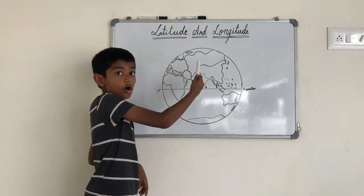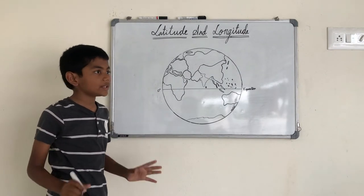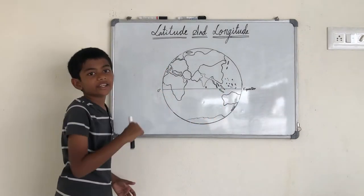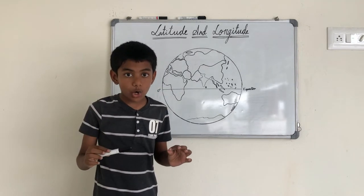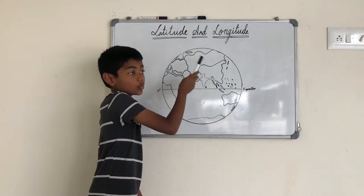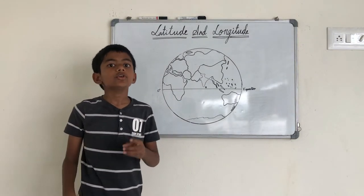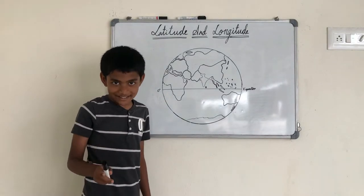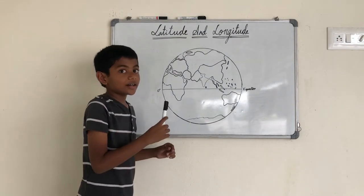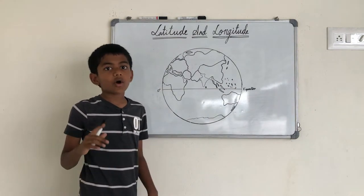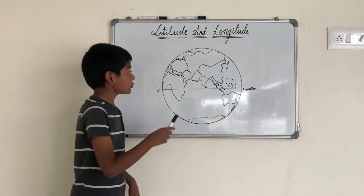Do you know why it's zero degrees? Because it is in the center of the earth. As the line gets higher or lower, the degree increases — for example, if the line is here, the degree will be 15 degrees north. Now let's talk about latitudes. Latitudes are horizontal imaginary lines which run from east to west on a globe or map. You might be wondering — is the equator a latitude? Yes, it is one of the latitudes, and it is the only latitude which separates the earth into two halves.